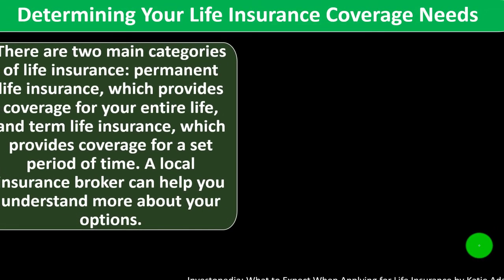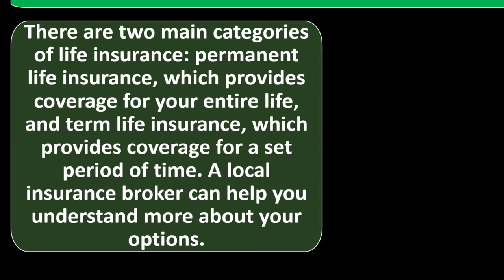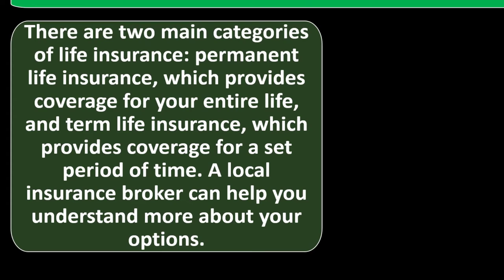There are two main categories of life insurance. You've got permanent life insurance, which provides coverage for your entire life, and term life insurance, which provides coverage for a set period of time. A local insurance broker can help you understand more about your options. Term insurance is more like the classical life insurance coverage.